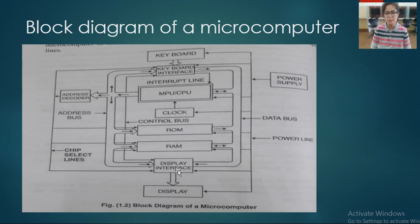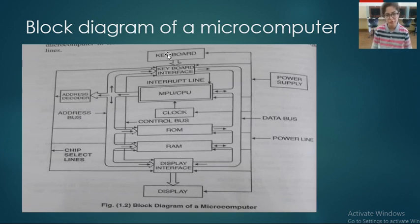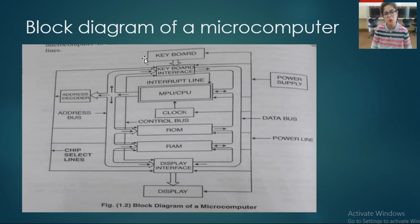That is RAM, ROM, display — you can simply use a bi-directional arrow to connect all these blocks. After drawing all these blocks, you can draw a single line from keyboard to display, and you can explain the buses like data bus, control bus and address bus.